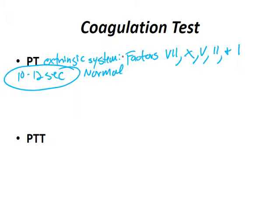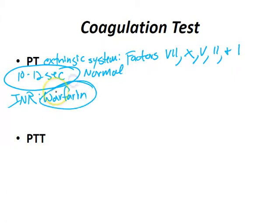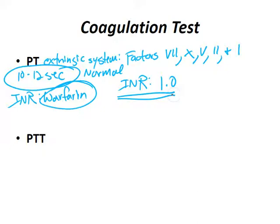We developed something called the international normalized ratio, also known as the INR, as a standardized value for the prothrombin time. It's often quoted for warfarin therapy, not heparin therapy. The normal INR is 1.0.